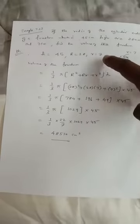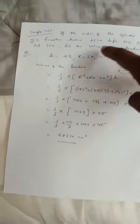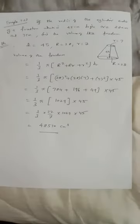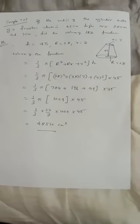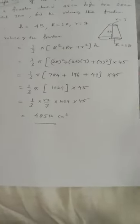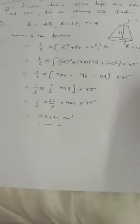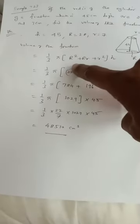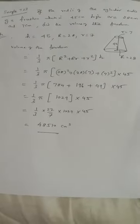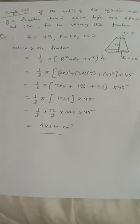The height of the frustum is 40 cm. Find the volume of the frustum. The volume of the frustum formula is 1 by 3 pi into r square plus rr plus r square into h.